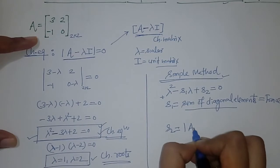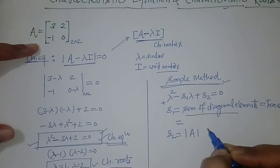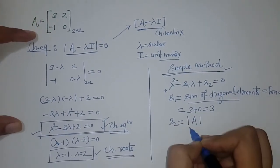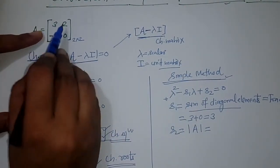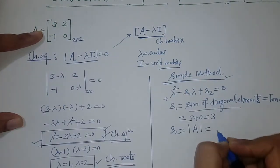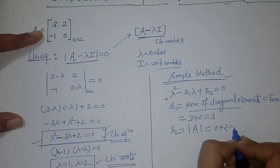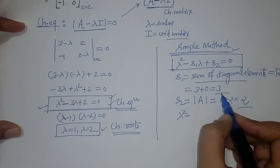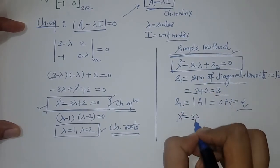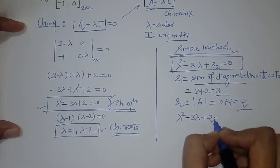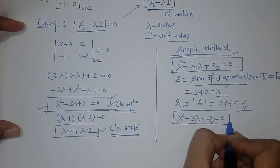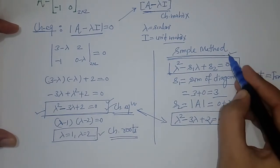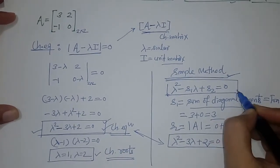S2 is the determinant of the given matrix. We find S1: the diagonal elements are 3 and 0, so their sum is 3. For S2, we compute the determinant by cross multiplication: 3 times 0 is 0, minus 1 times minus 2 gives plus 2, so S2 equals 2. Putting these values in the equation gives us the characteristic equation — the same as found previously. This is the simple method for finding the characteristic equation for a 2 by 2 matrix.